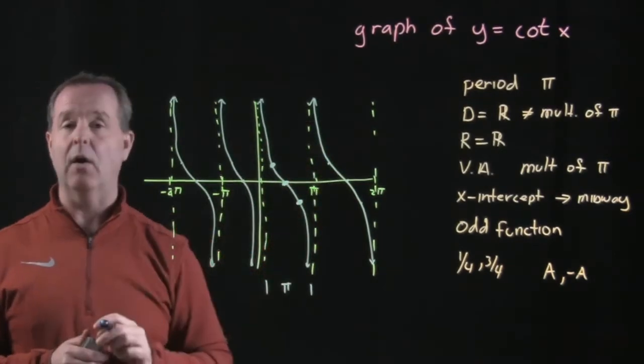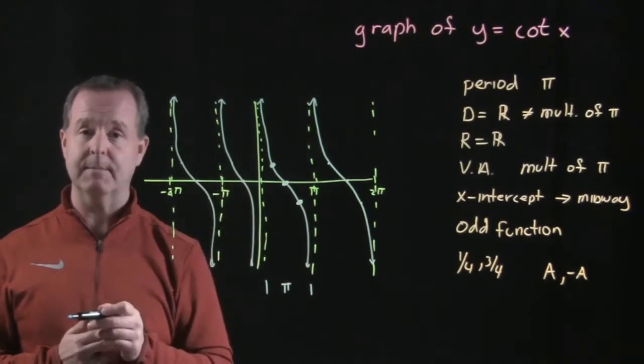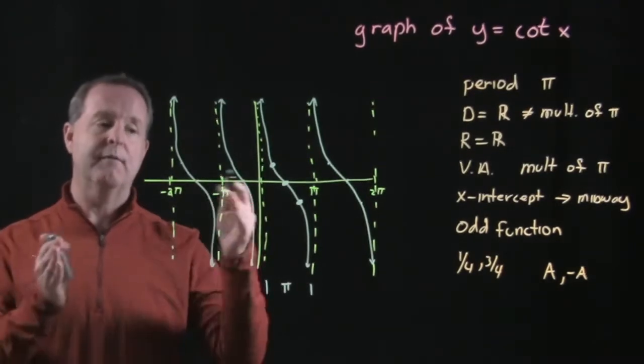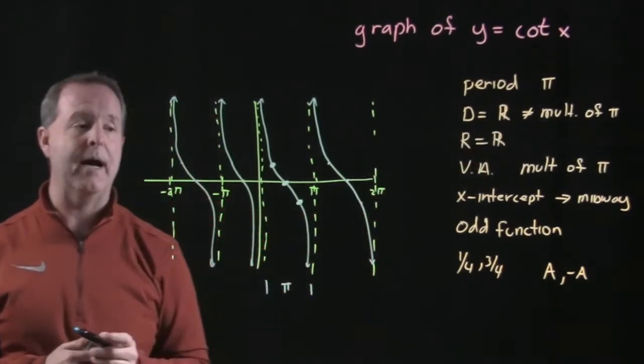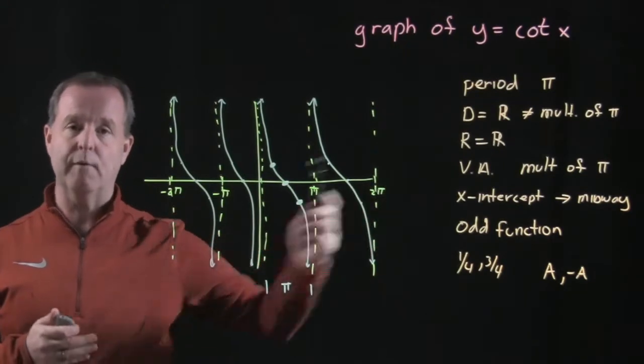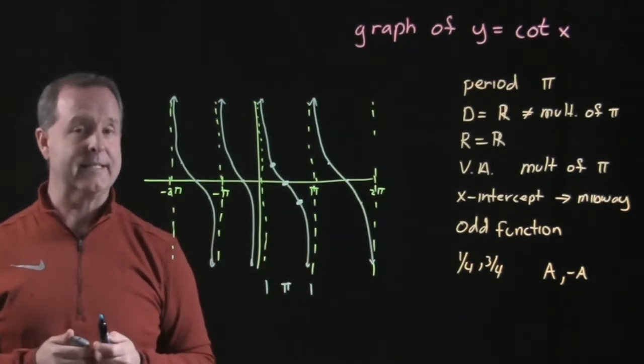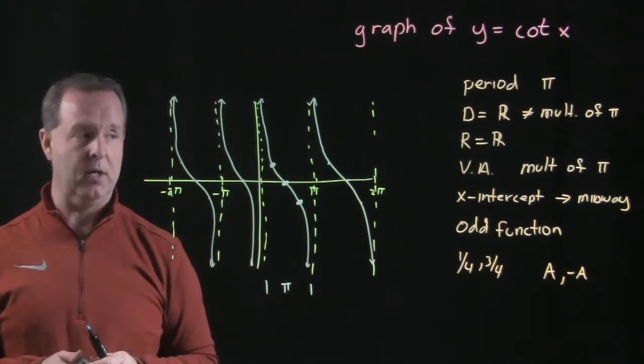The domain is all real numbers except where it crashes on the vertical asymptotes, just like on the tangent. For cotangent, those vertical asymptotes are at integral multiples of pi: pi, 2pi, 3pi, and so forth. That's where the domain does not exist, and consequently, that's where the vertical asymptotes are.